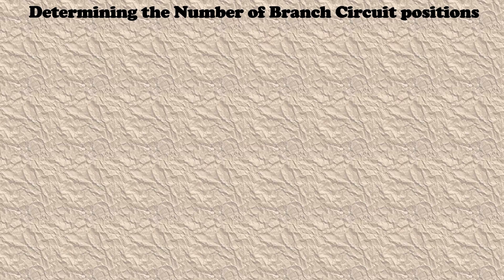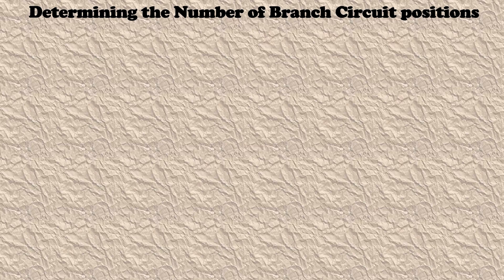I've thrown together a quick chart as a reference — feel free to pause the video and copy it down. This takes us through the examples we just covered. On the left is the required ampacity of the service or feeder conductor, and the next question is whether there is a central electric furnace. You'll notice the first two ranges are marked not applicable because the furnace is not a consideration there. Past that point, we do need to determine if there is or is not a central electric furnace provided for.